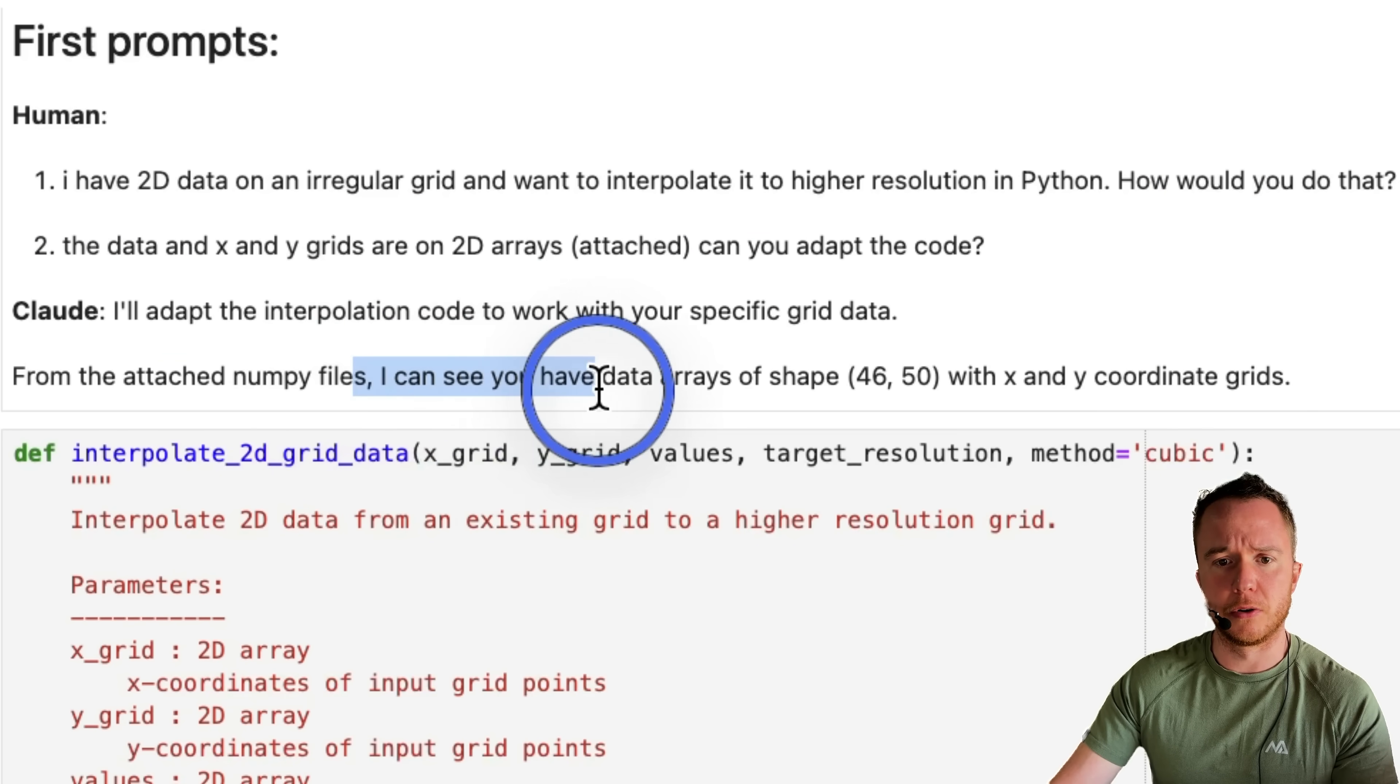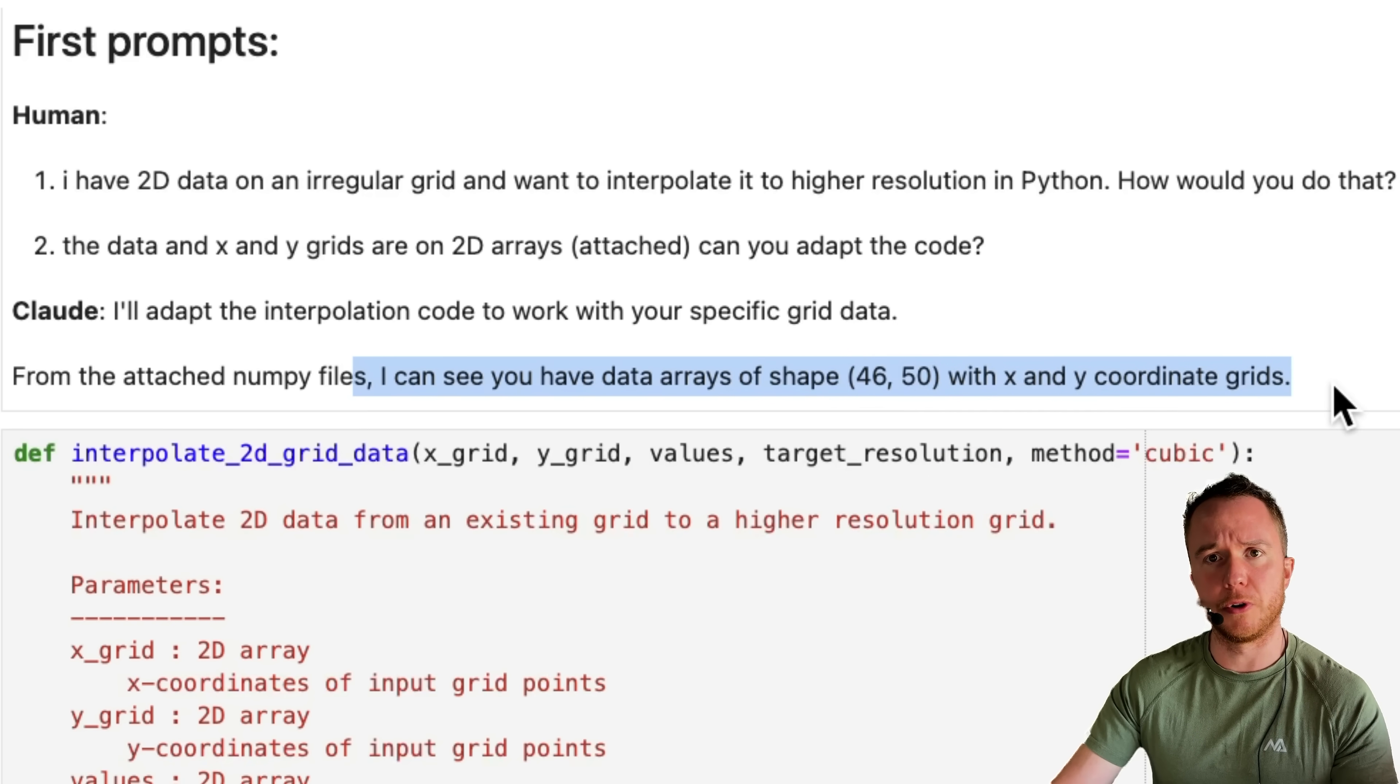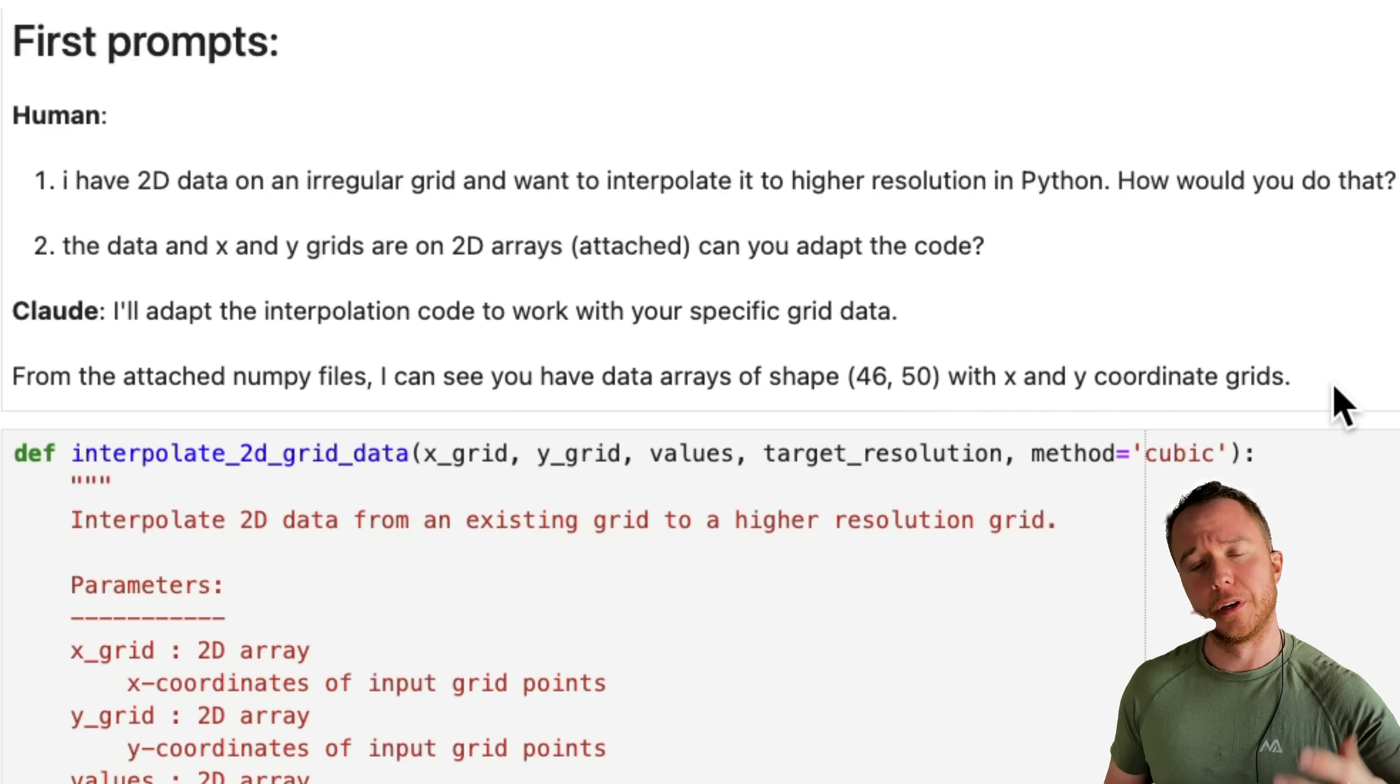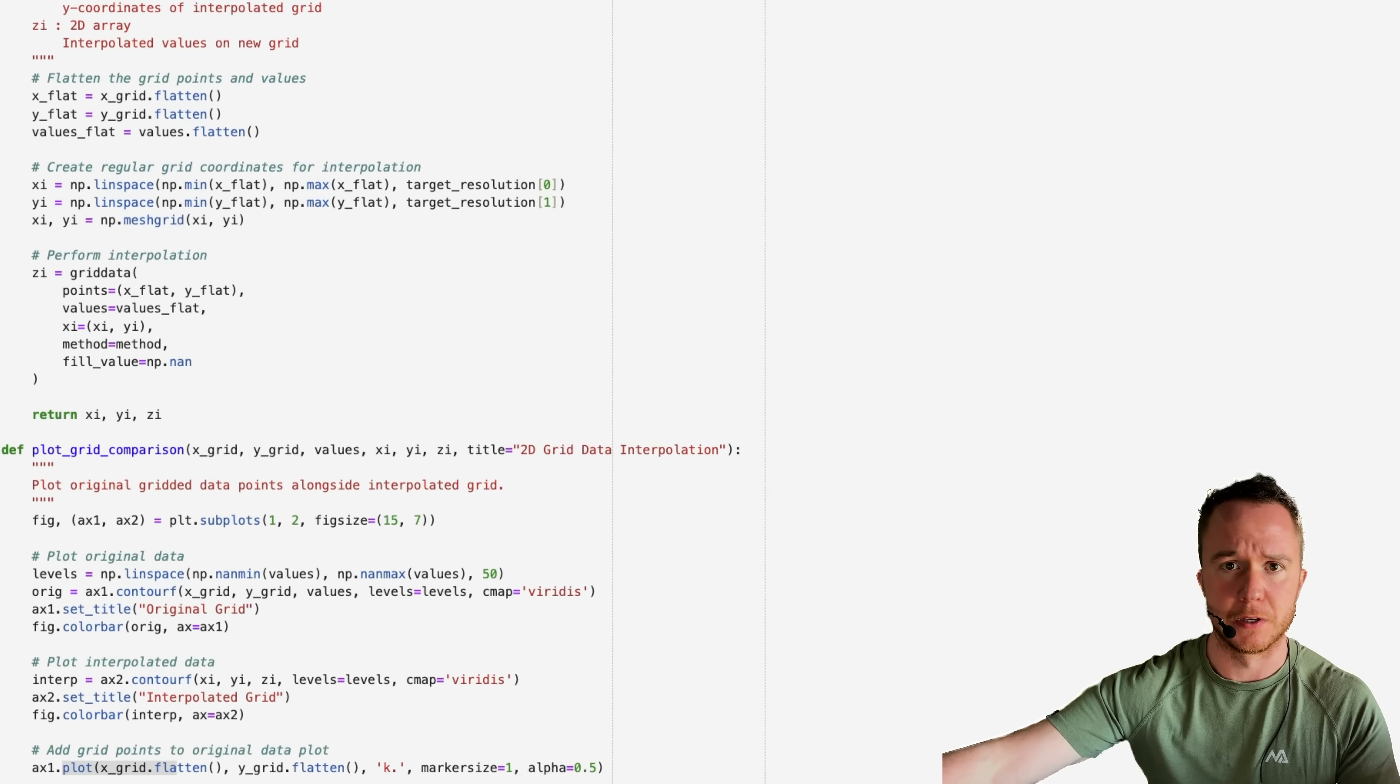I uploaded those files to Claude and asked it to adapt the code to the data. And it will tell you that it can see that you have data arrays of shape 46x50 with x and y coordinate grids, so it understands the data that you give it. Just from these two prompts and uploading the data, Claude can already solve the problem and create a plot comparing the results. Let's have a look at that first.